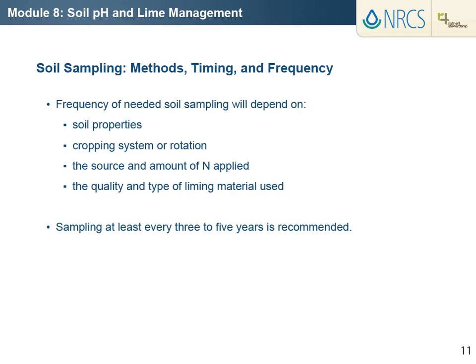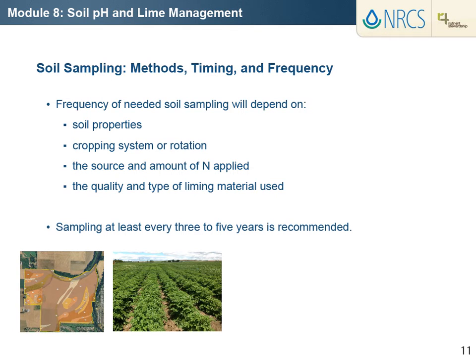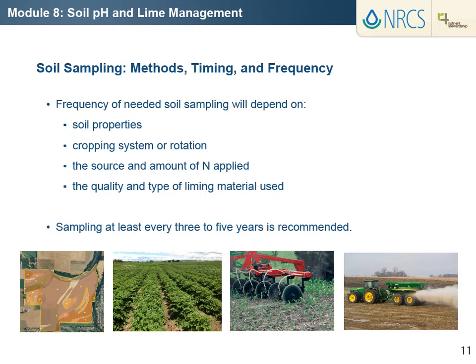The frequency of soil sampling to determine lime requirement will depend on soil properties, crop, the source and amount of nitrogen applied, and the quality and type of liming material used. Under intense cereal production with high rates of nitrogen fertilizer, acidity will increase rapidly, especially in coarse textured, low cation exchange capacity soils. Finely ground liming materials will result in a more rapid increase in pH, but also a more rapid decrease in pH over time. Sampling at least every 3 to 5 years is recommended.